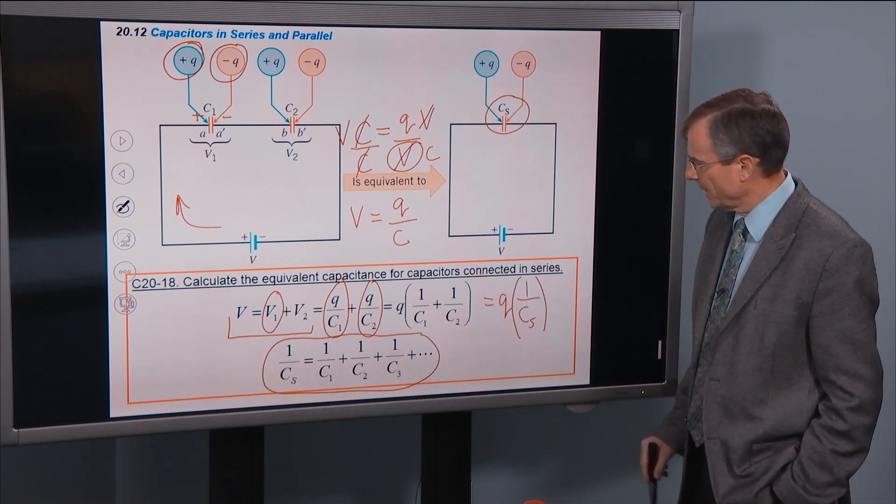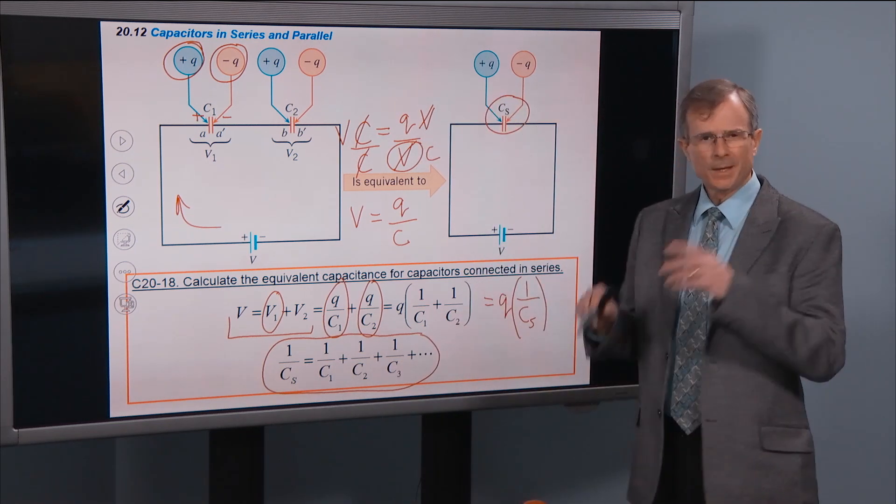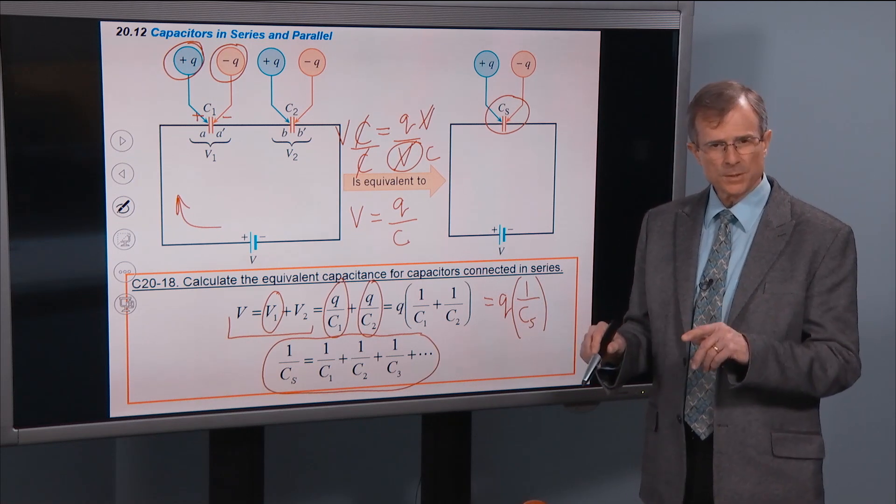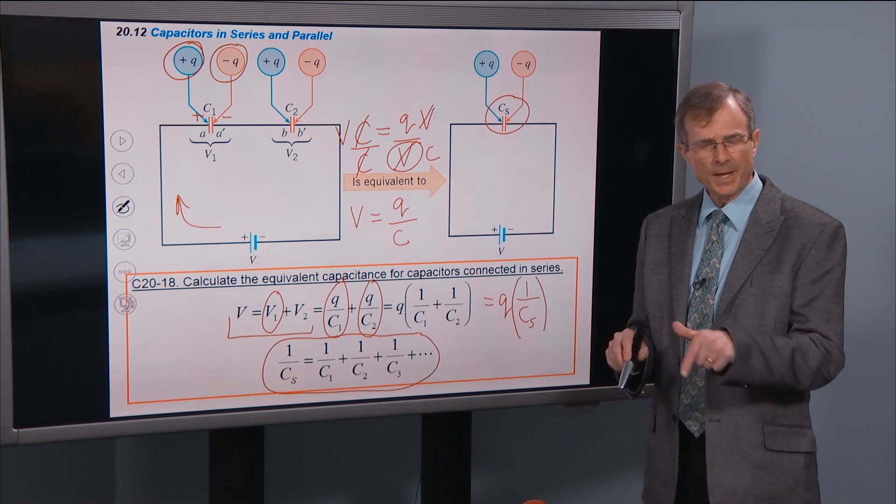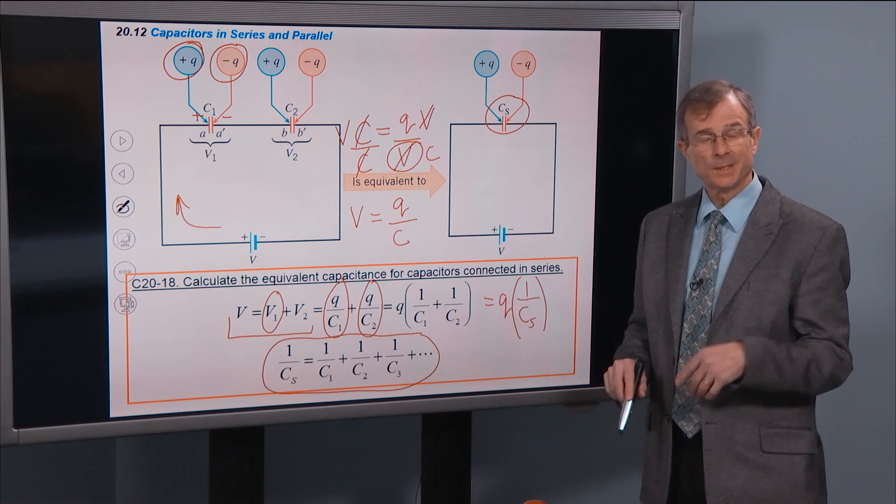Plus another one. So you say, well hang on, in series resistors you just add them up, Rs equals R1 plus R2. And I say, you're right.